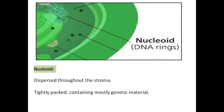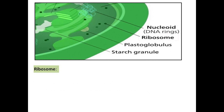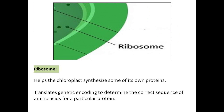The nucleoid is dispersed throughout the stroma and is tightly packed, containing mostly genetic material. The ribosome helps the chloroplast synthesize some of its own proteins by translating genetic encoding to determine the correct sequence of amino acids for a particular protein.